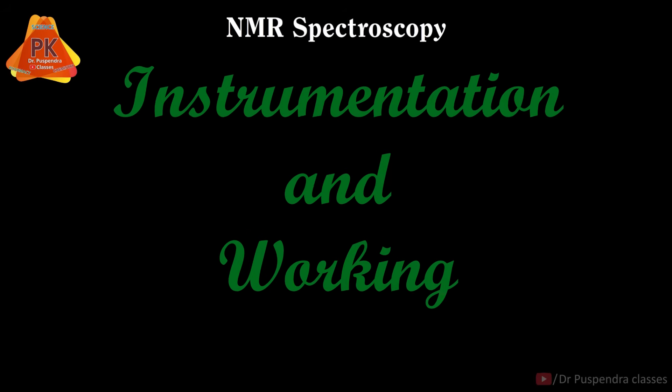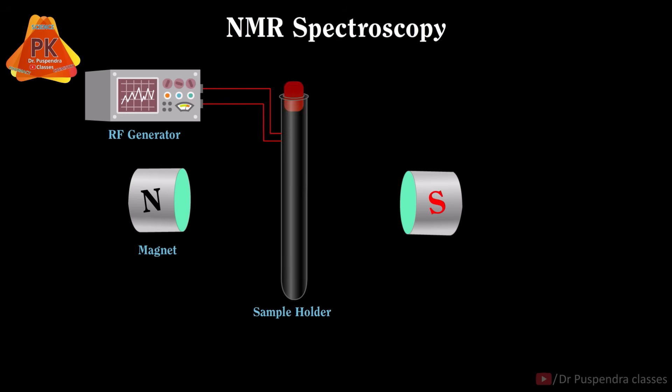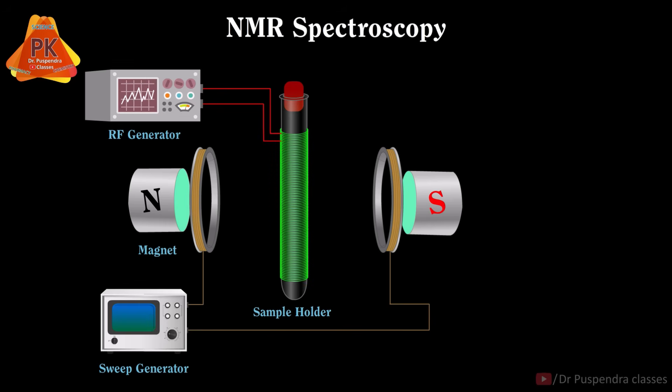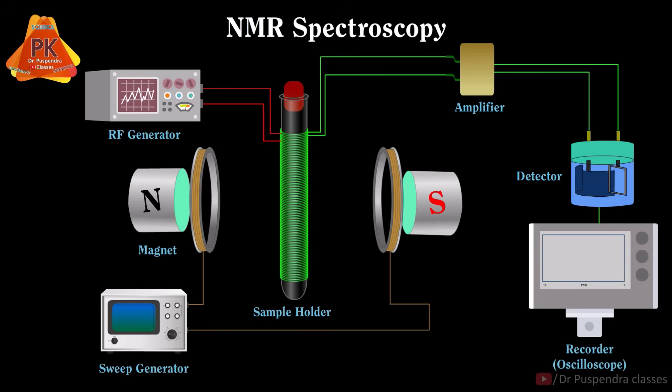NMR instrument is constructed by compiling different parts which are radio frequency generator, magnet, sample holder, sweep generator, receiver coil, amplifier, detector and recorder. It is also known as oscilloscope.